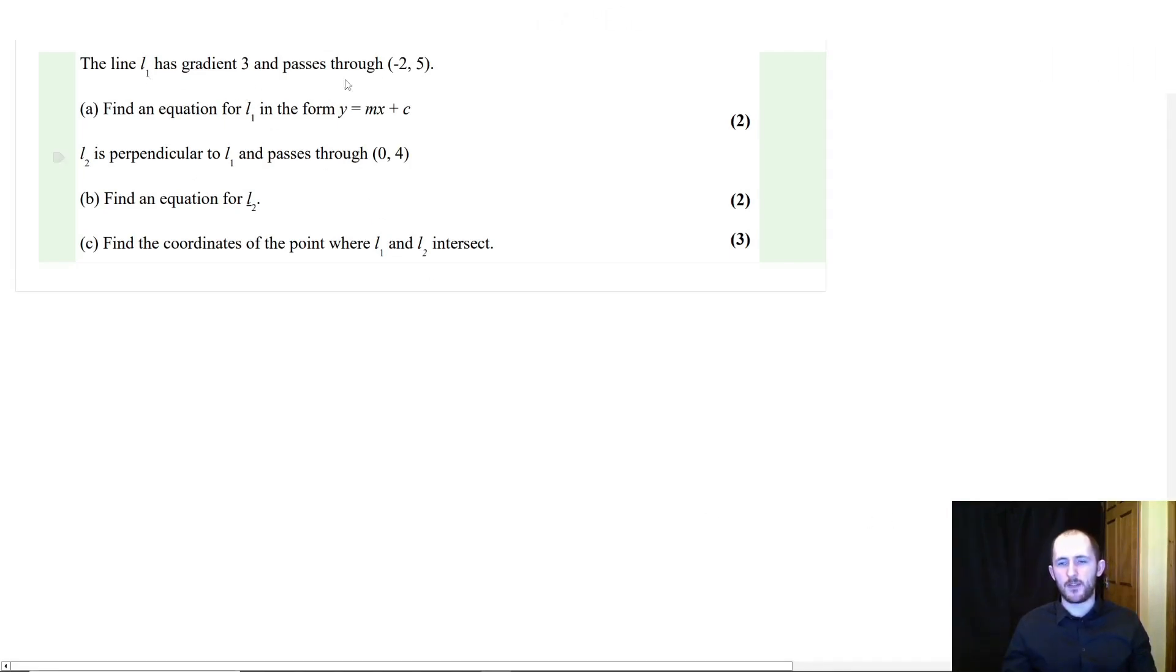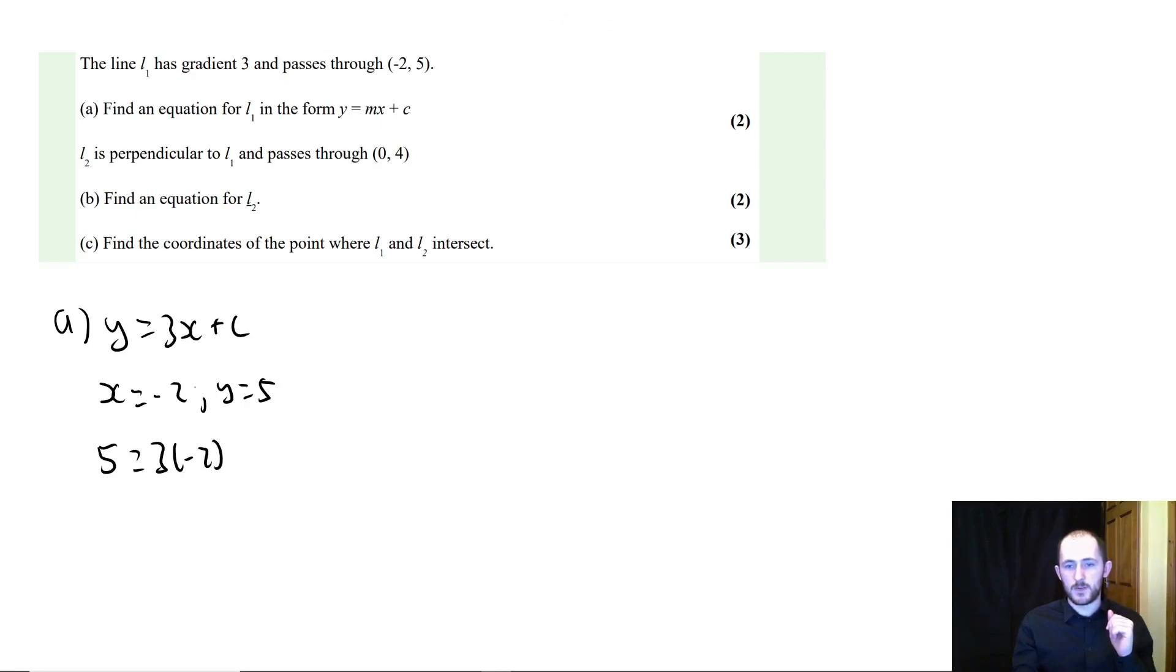So we have line L1 has gradient 3 and passes through minus 2, 5. Find an equation of L1. So with this one, we have m. So we have Y equals 3x plus C. And now we have a coordinate so we can sub that in to find what C is. Because X is equal to minus 2 in this case and Y is equal to 5. So we have 5 equals 3 times minus 2 plus C. So 5 equals minus 6 plus C. C is equal to 11. So our final answer is going to be Y is equal to 3x plus 11. Nice and quick.